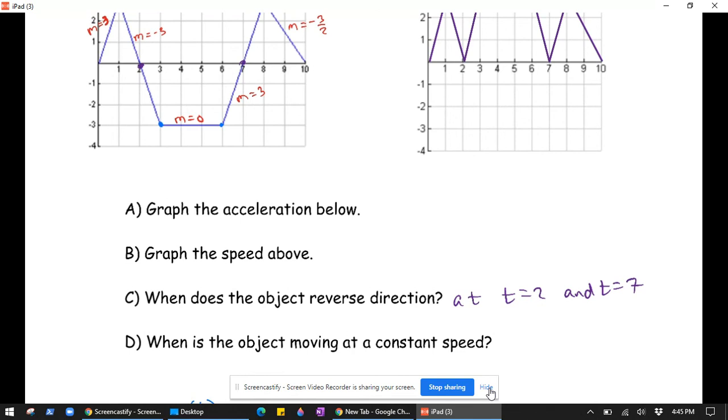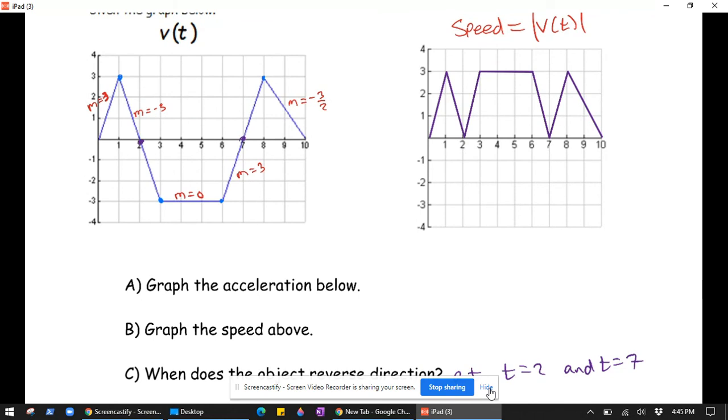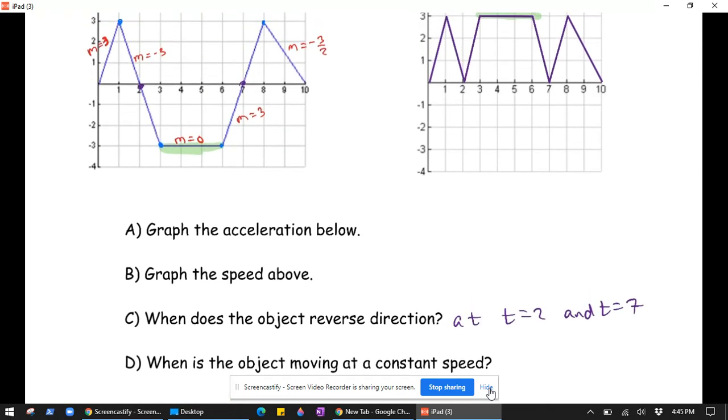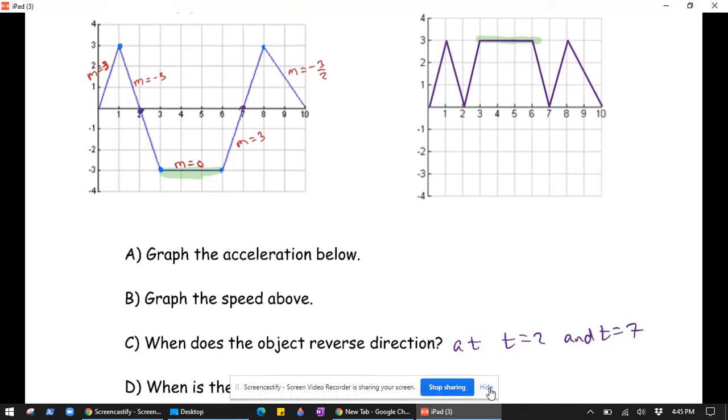When is the object moving at a constant speed? It's moving at a constant speed whenever the speed function is constant, which is here. Also, when the velocity function is constant. And that's also when your acceleration is 0. So however you think about it, it's moving at a constant speed on the intervals from 3 to 6.